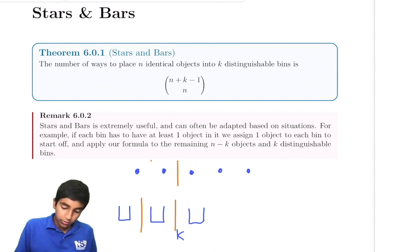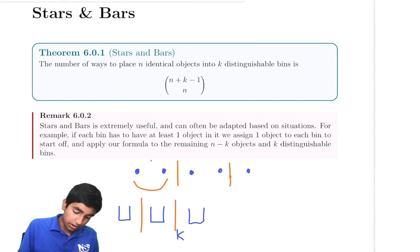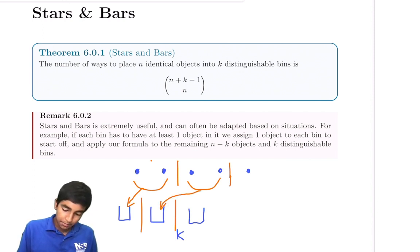Then what we can do is we can say anything to the left of the first bar goes to bin one. Anything in between goes to bin two. And anything right of the second bar goes in the third bin.